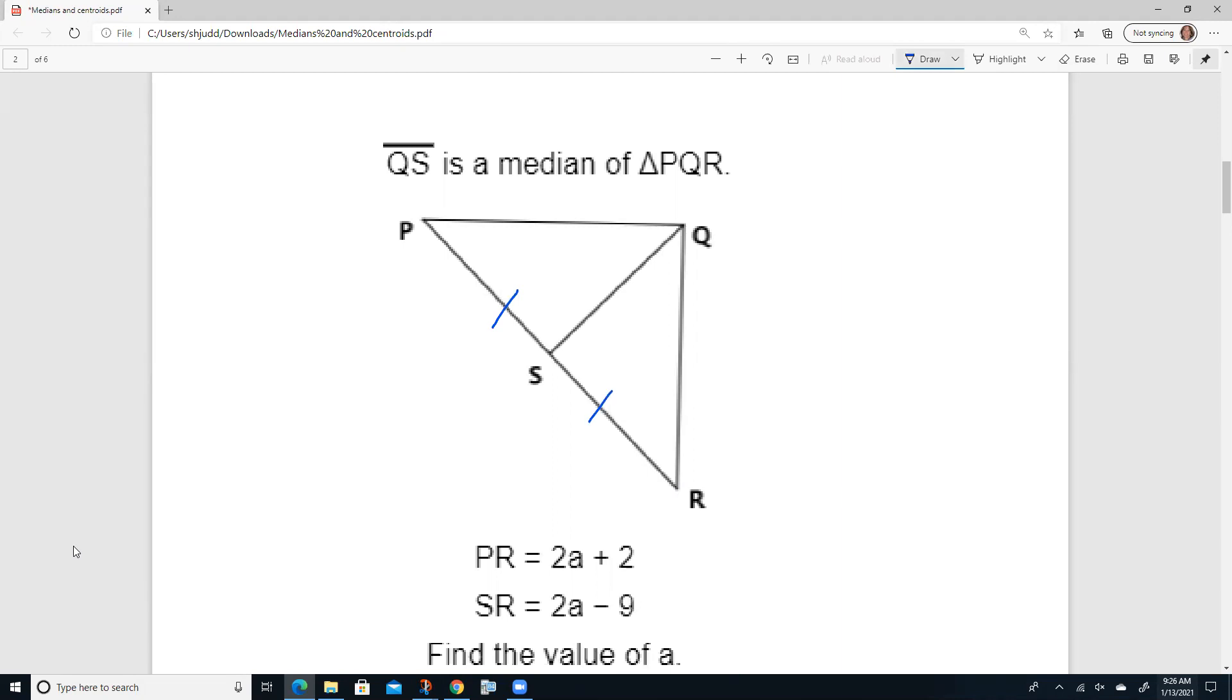Let's find out if that's useful. Well, we are told here that PR, which is the whole distance, is 2a plus 2. And we're told that SR is 2a minus 9.